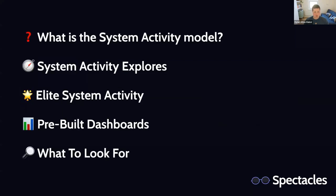Awesome, that's all the preamble. So we can jump right in. There are roughly five sections today. We're going to talk about what the system activity model is, how you get access to it, where you can find it. We're going to talk about the explorers in the system activity model and enumerate them and talk about which ones we find to be most valuable. We're going to talk about what Looker calls Elite System Activity, list through the different pre-built dashboards, and then what I've called 'what to look for' — assuming the pre-built stuff isn't exactly suiting your needs, examples of different paths you can take to diagnose different types of problems.